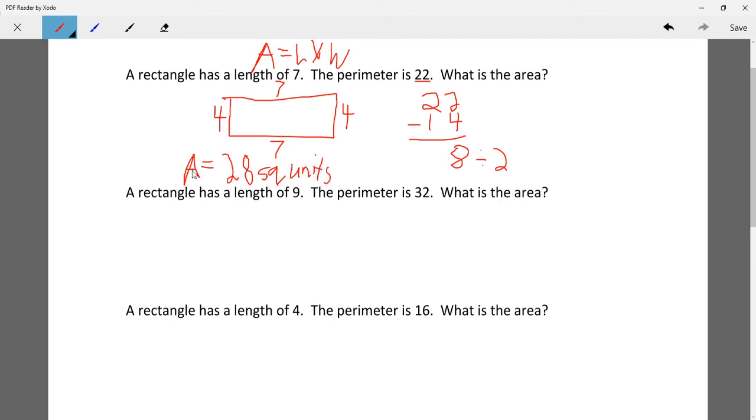So remember, area is always in squared units. Okay, so let's go to this one. A rectangle has a length of 9, the perimeter is 32, what is the area?